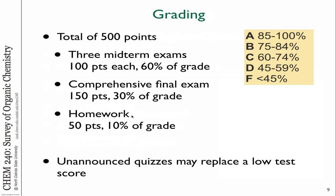Grading in this class: I'm planning to have three midterm exams throughout the semester during class time, and then the final exam will be comprehensive. The point system is: 60% total for the exams, 30% of your grade from the final exam, and homework about 10% of your grade. I'll take all those homework points and scale them to 10% or 50 points.